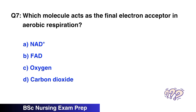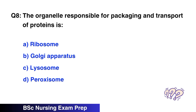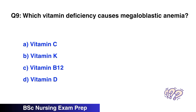Question number 7: Which molecule acts as the terminal electron acceptor in aerobic respiration? The right option is C, oxygen. Question number 8: The organelle responsible for packaging and transport of proteins is the right option B, Golgi apparatus.